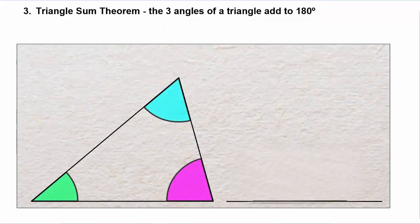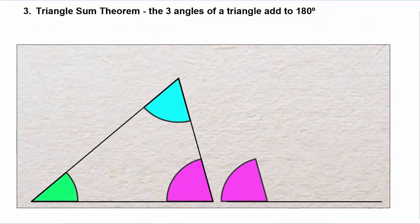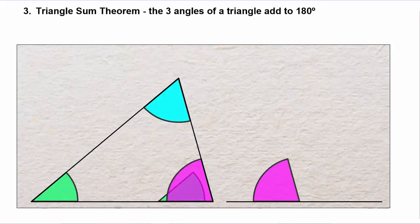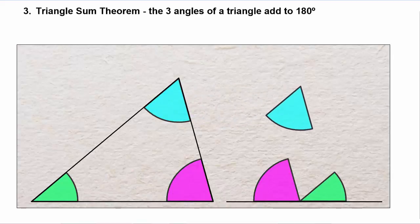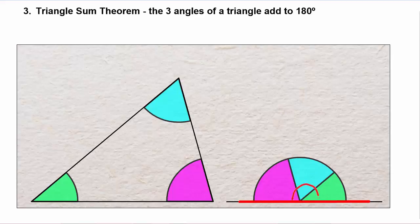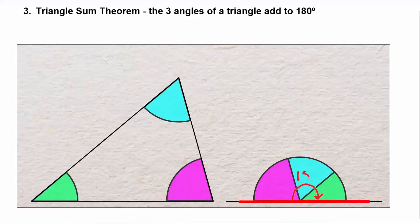You can see here in this animation: if we cut out the angles in the triangle and line them up together, you can see that their exterior sides end up forming a line, and we know that a straight angle measures 180 degrees. So that's why the three angles of a triangle add to 180 degrees.